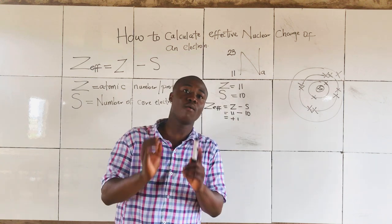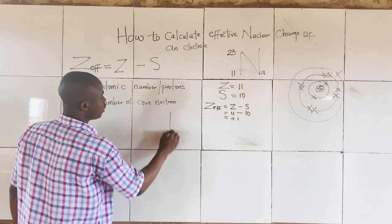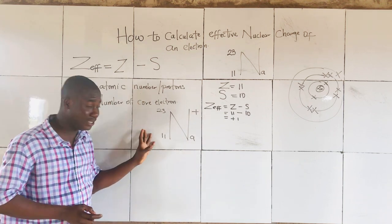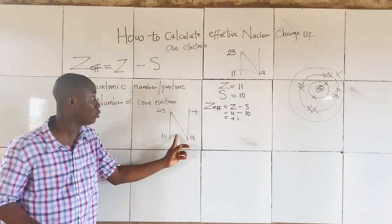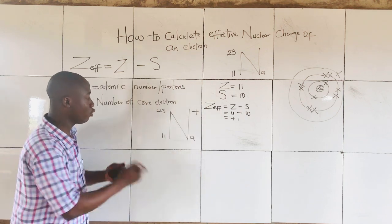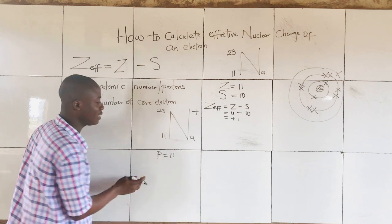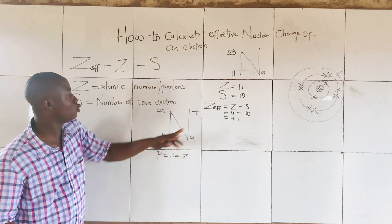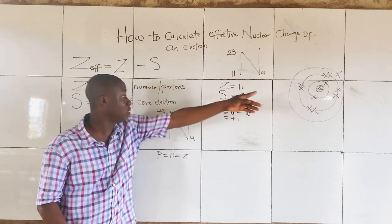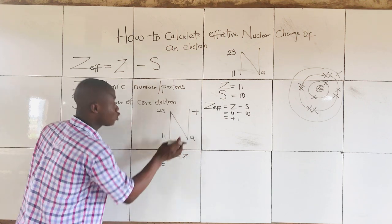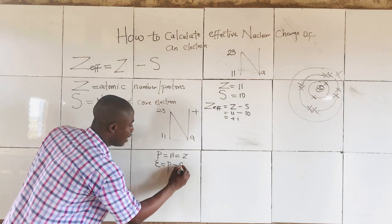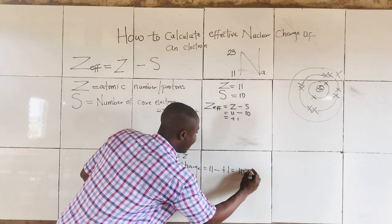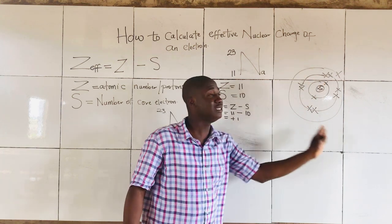Now taking another example using sodium ion. Sodium ion is positively charged — it is a metal. So sodium ion has atomic number 11 and mass number 23. The proton number is 11, same as the atomic number Z. Since this ion has a positive one charge, the total number of electrons equals proton number minus the charge: 11 minus 1 equals 10 electrons.